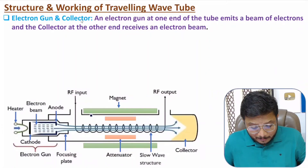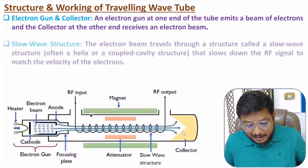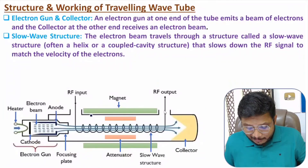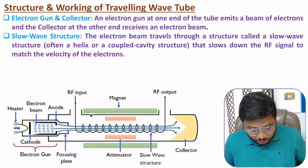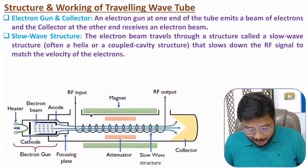The first section is based on the electron gun and collector, transmitting a linear electron beam. The second section is based on the slow wave structure — a helical shaped winding. RF input is connected to one end of the winding and RF output is taken from the other end. During propagation of RF input through the winding, there is interaction with the electron beam, causing velocity modulation of the electrons.